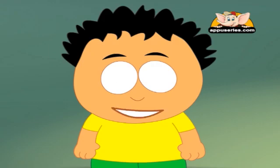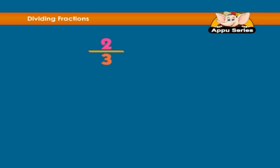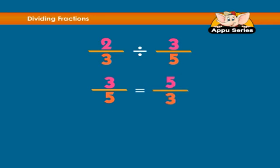This will make sense when we look at an example. Let's take 2 thirds and divide it by 3 fifths. So we are going to be taking the reciprocal of the second number, which will be 5 thirds. So we multiply 2 thirds with 5 thirds.